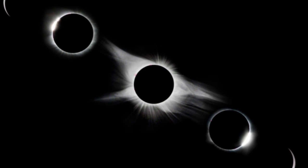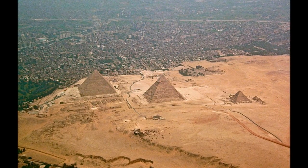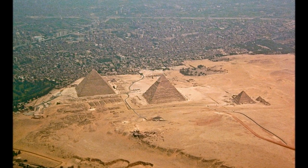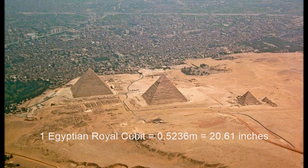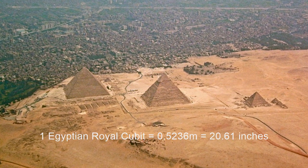So what does the number 720 have to do with the Great Pyramid? Whoever designed and built it used units of measurement we call the Egyptian royal cubit, which is about 20 inches or 52 cm.